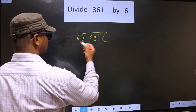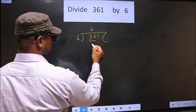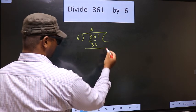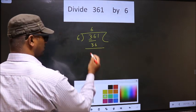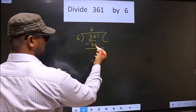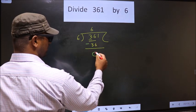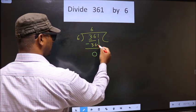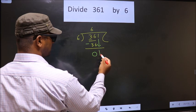When do we get 36 in the 6 table? 6 times 6 is 36. Now you subtract. 36 minus 36 is 0. Now you bring down the beside number down, that is 1.